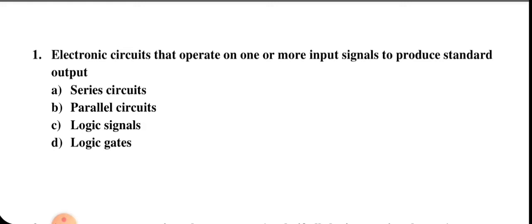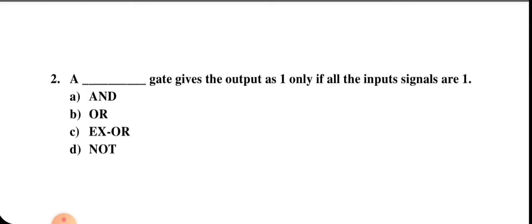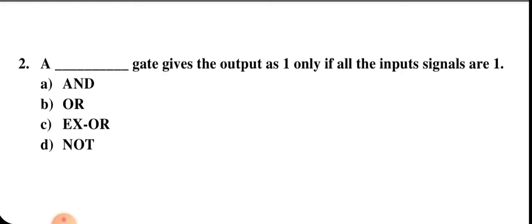First question: an electronic circuit that operates on one or two input signals to produce a standard output — is it a series circuit, parallel circuit, logic signals, or logic gates? Option D is correct: logic gates operate on one or more input signals to produce standard outputs.